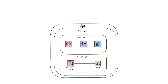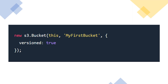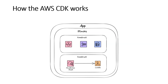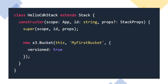When working with CDK you will often see three terms: Construct, Stack, and App. Constructs are basic cloud components — the basic building block. An example of a construct is an S3 bucket. Stack refers to a unit of deployment. We can have more than one construct inside a stack. For example, if you want a queue and a Lambda, you can add them into the stack.